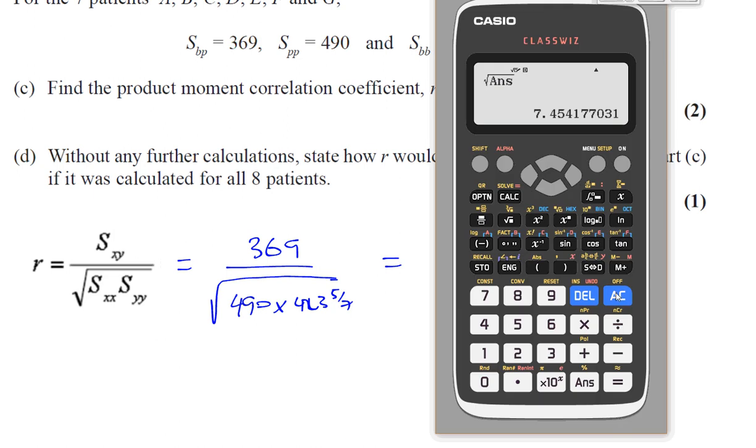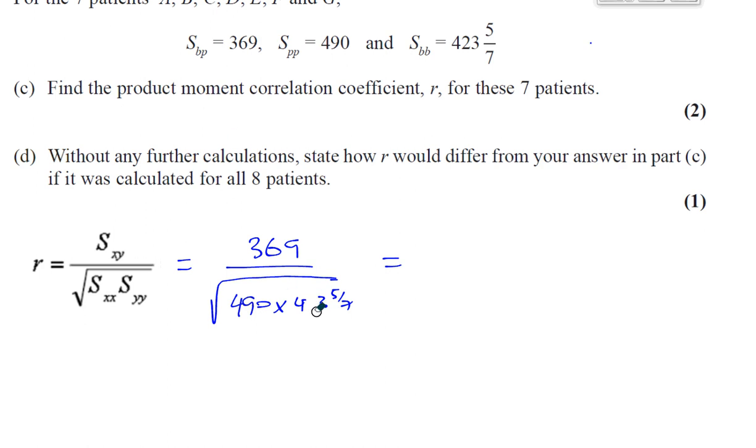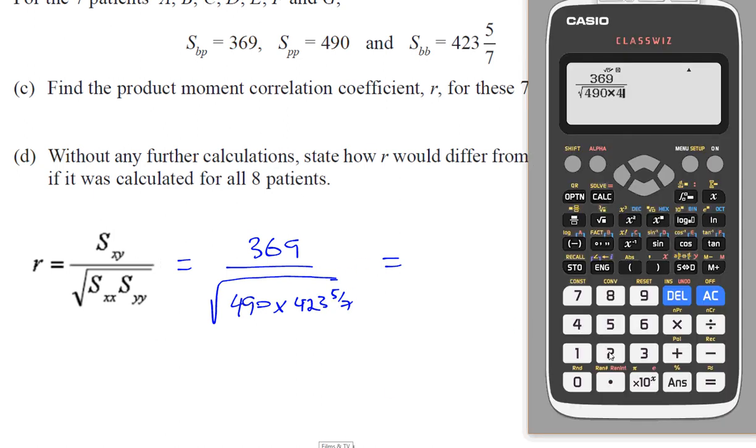Now, the value of R is basically, the value of R will tell you how closely these are, the data, the two bits of data, B and P are correlated to each other. It'll tell you what type of correlation they have, whether it's positive or negative correlation. And it will also tell you how close they are to a straight line, how strong the correlation is. So let's just find out what this is. 369 divided by the square root of 490 multiplied by 423 and 5 7. Let's just make that a bit tidier. 423 and 5 7.